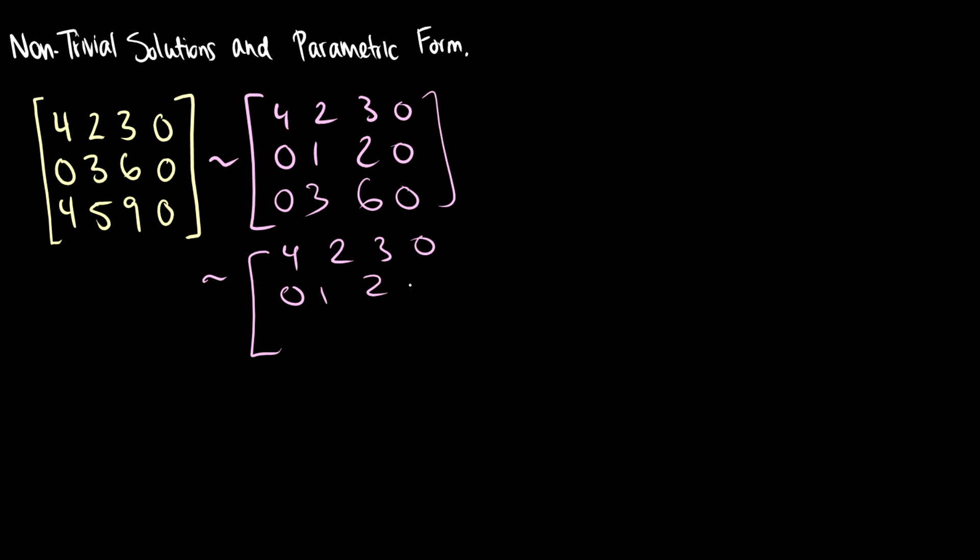The second row can be reduced to 0, 1, 2, 0. So we can see if we take the third row and subtract the second row, we get 4, 2, 3, 0; 0, 1, 2, 0; and then this bottom row has four zeros.